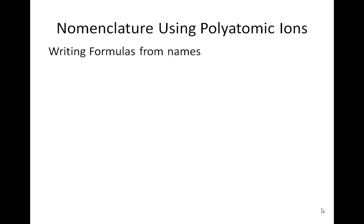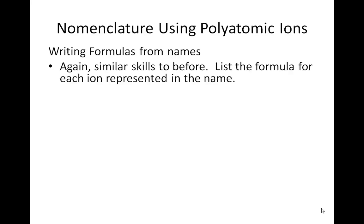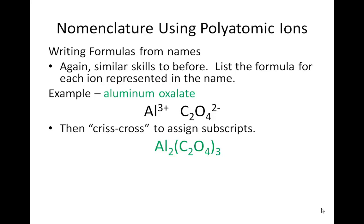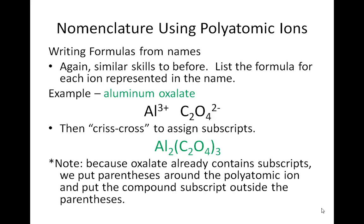Going the other way — writing formulas from names — list the formula for each ion in the name. For example, aluminum oxalate: aluminum has a positive 3 charge, so Al3+. Oxalate has a formula of C2O4 with a negative 2 charge. We crisscross to assign subscripts, giving us Al2(C2O4)3. Because oxalate already contains subscripts, we put parentheses around the polyatomic ion and place the compound subscript outside. Otherwise it would look like we have 43 oxygens — we actually have 3 oxalates, each containing 4 oxygens.